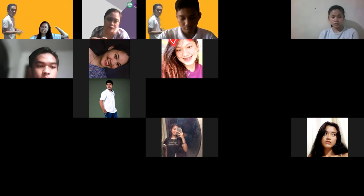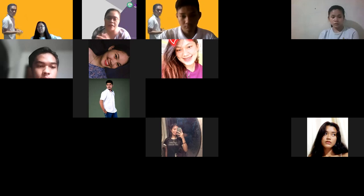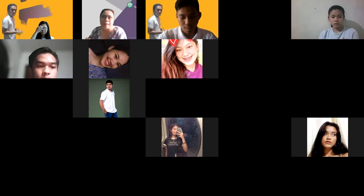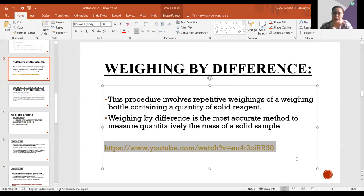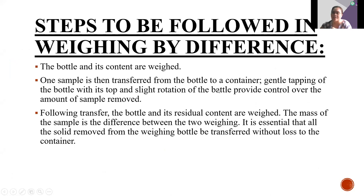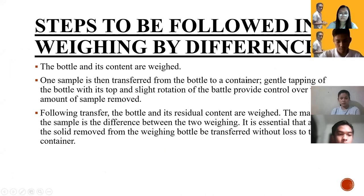In weighing by difference, you first weigh the container plus sample together, then transfer the sample to another vessel, and reweigh the now-lighter container. The difference gives the weight of the sample transferred. The formula is the same as weighing by addition — weight of sample equals weight of container plus sample minus weight of container — but the order of weighing steps is reversed.